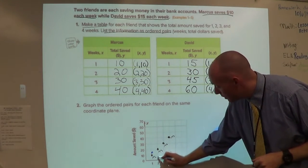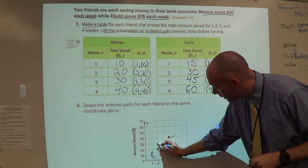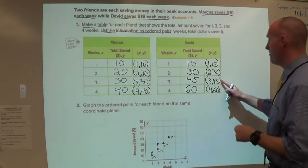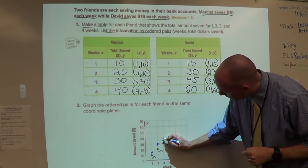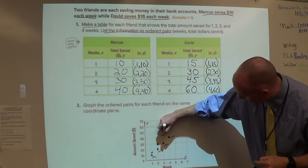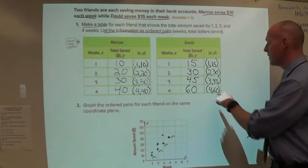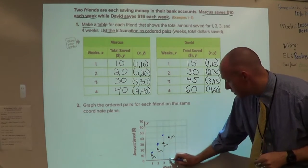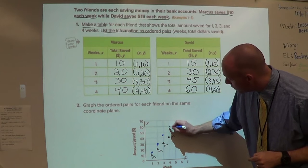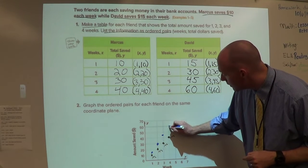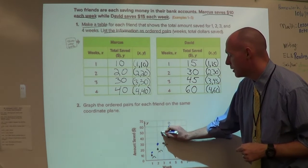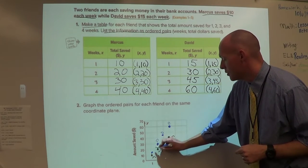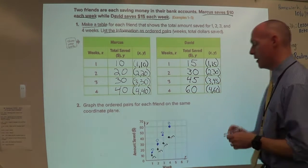(2,30). I go to two, I go up to 30. Good. Now I go (3,45). So I go three, I'm going to go past 40, halfway before 50. And then I'm going to go to (4,60). Four, and then I'm going to go up to 60. And I'm just going to label these with a D so we can see that that is David.